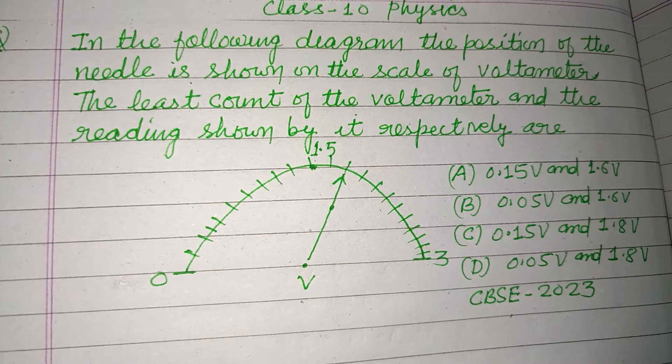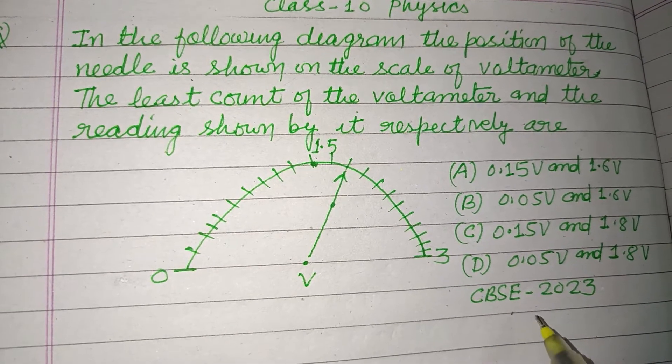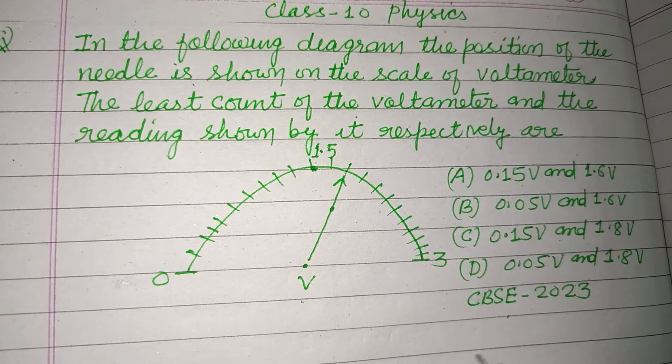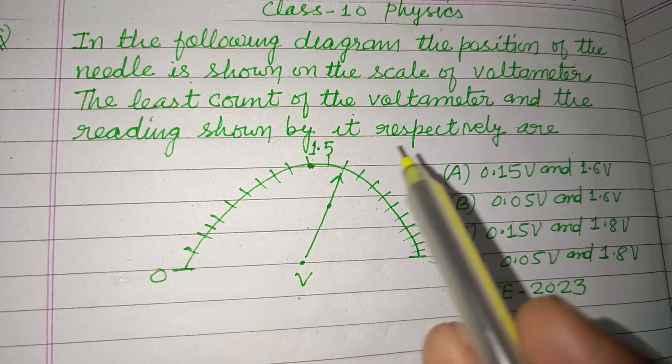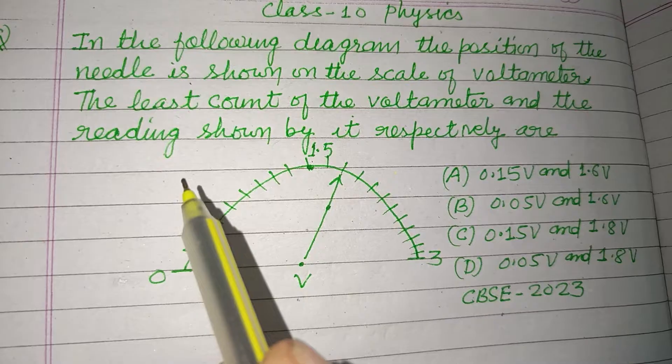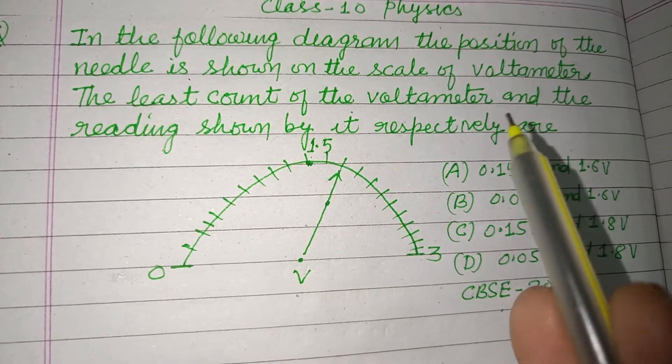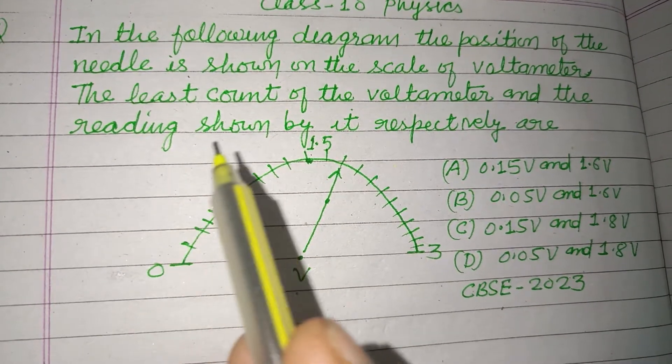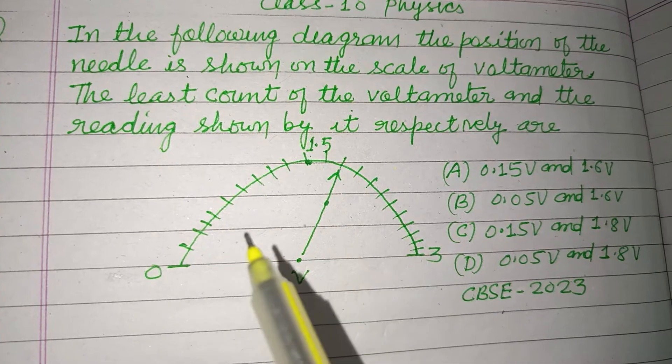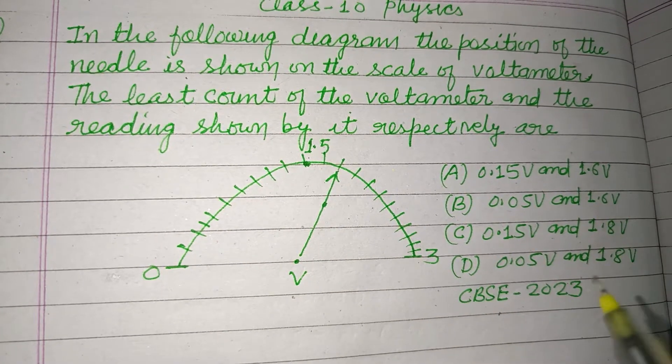Hello viewers, welcome to this YouTube channel. This is a question from CBSE Board Exam 2023, Class 10 Physics. In the following diagram, the position of the needle is shown on the scale of voltmeter. The least count of the voltmeter and the readings shown by it respectively are: